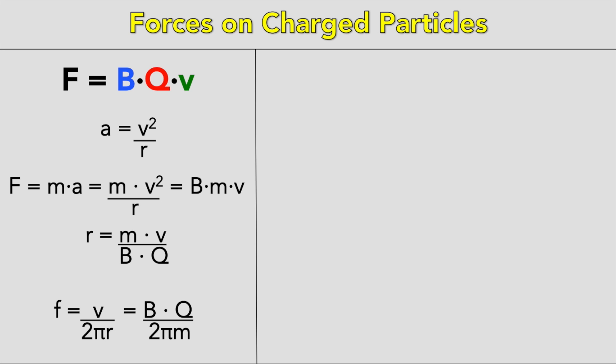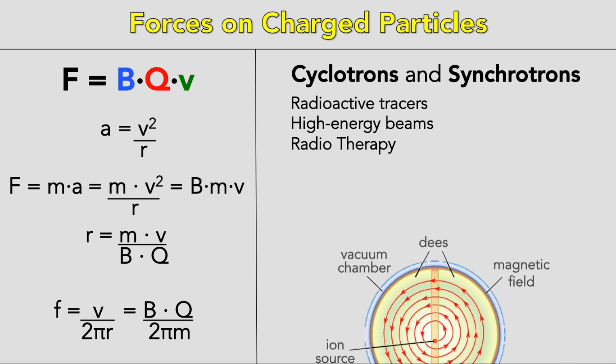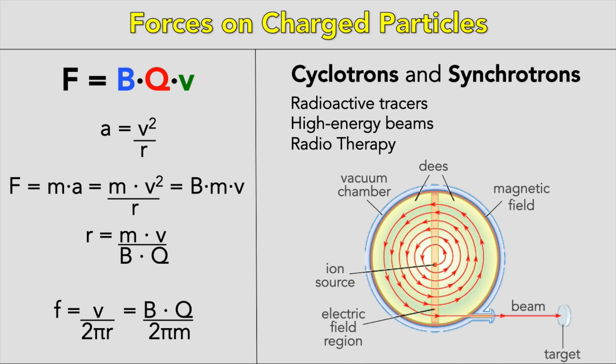This effect is used in particle accelerators like cyclotrons and synchrotrons. Cyclotrons have many uses as radioactive tracers or high-energy beams in radiotherapy. A cyclotron is made up of two hollow semicircular electrodes with a uniform magnetic field applied perpendicular to the plane of the electrodes. An alternating potential difference is applied between the electrodes and the particle exits the cyclotron at high speed. Because the particle's speed is increasing, the radius of the particle's path is also increasing.